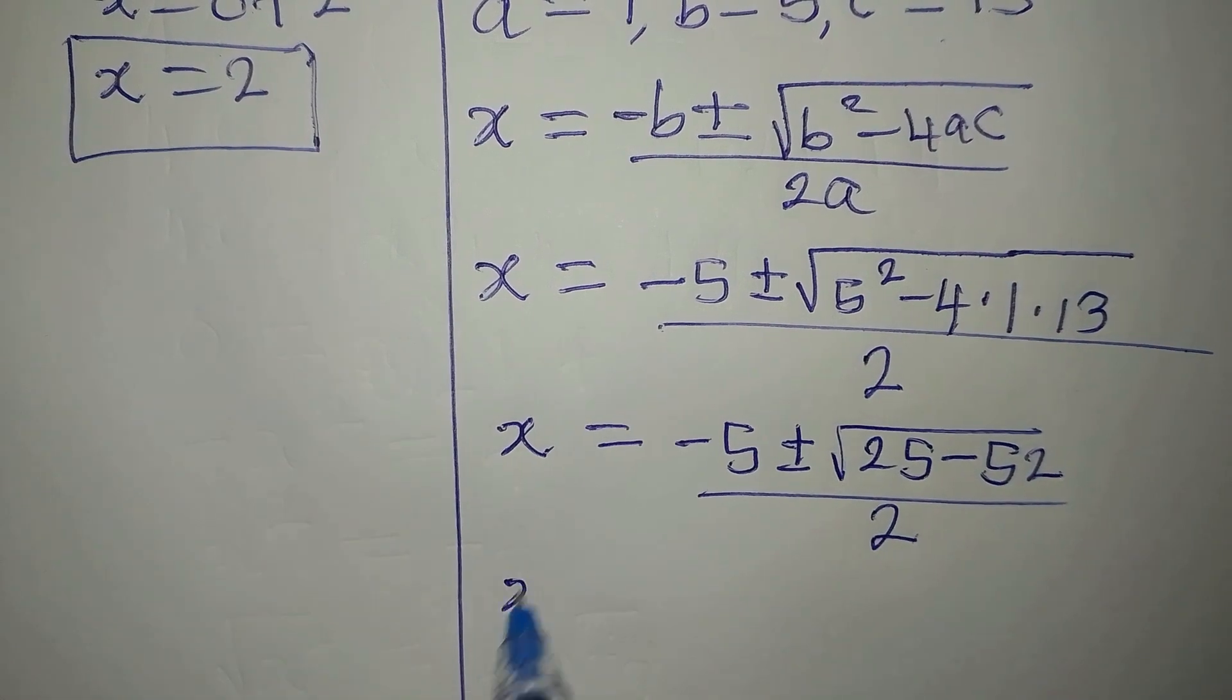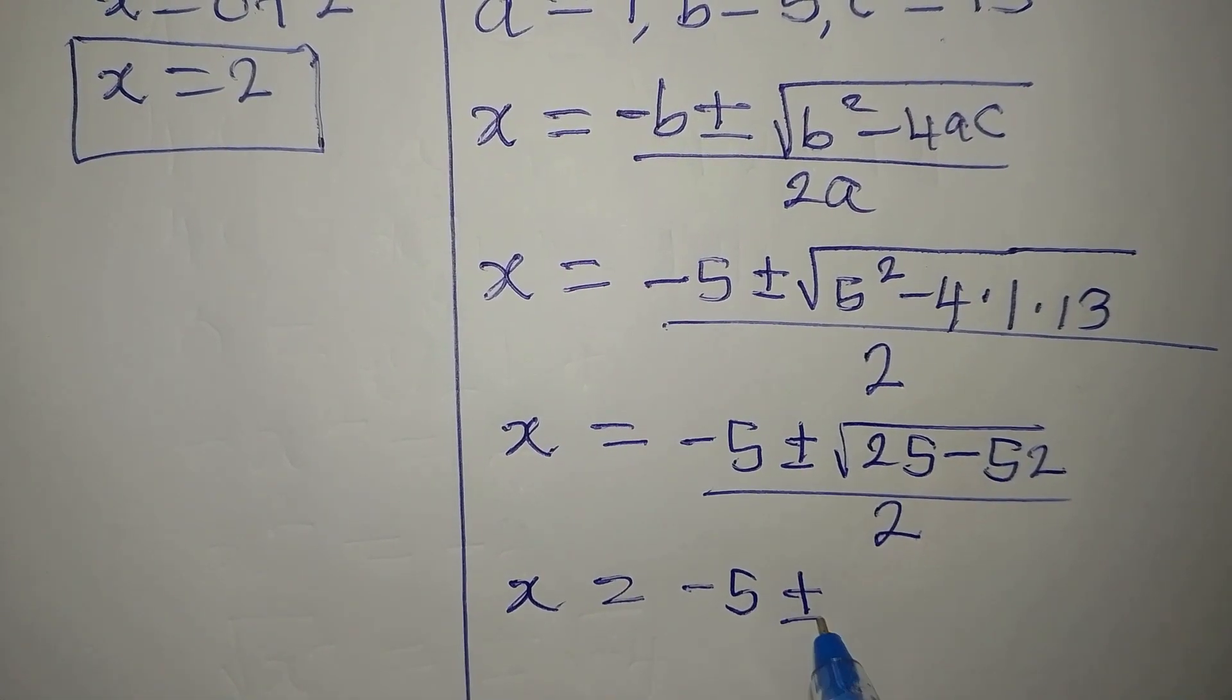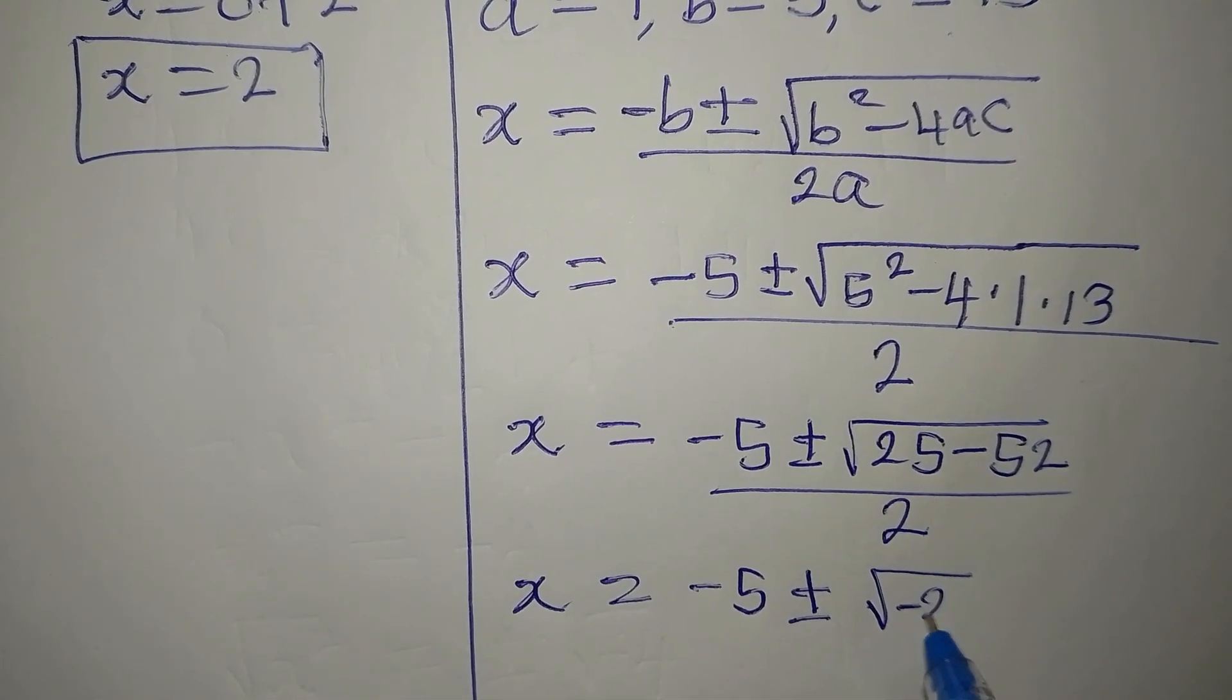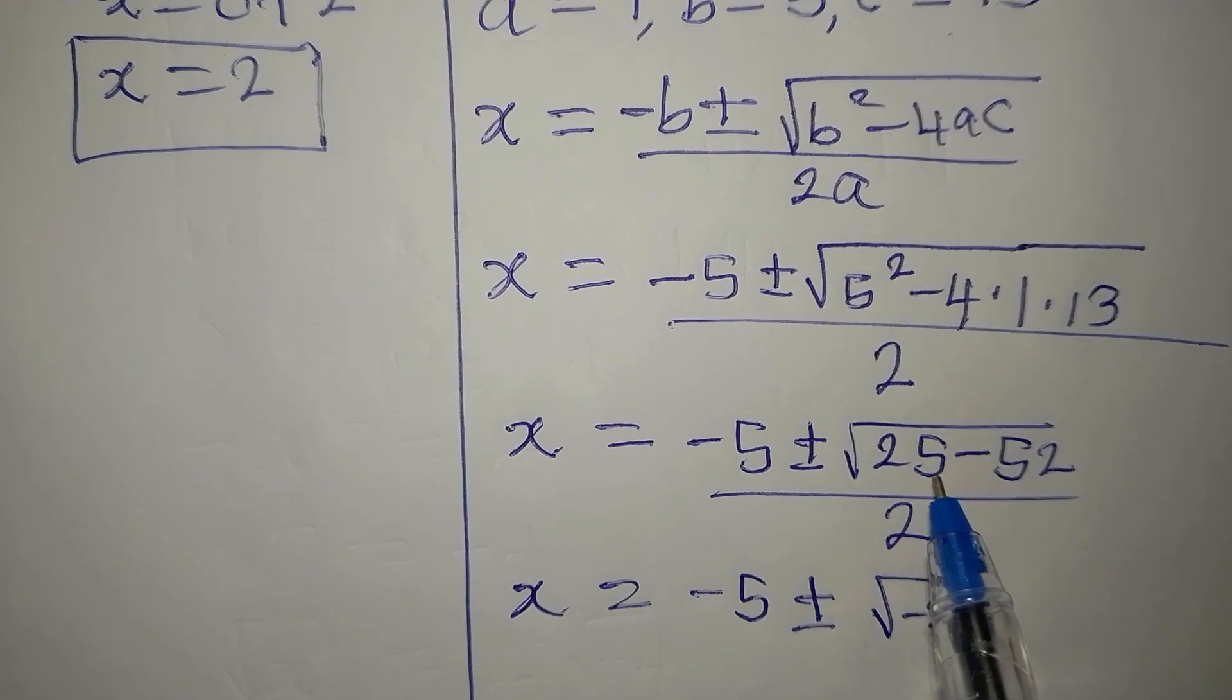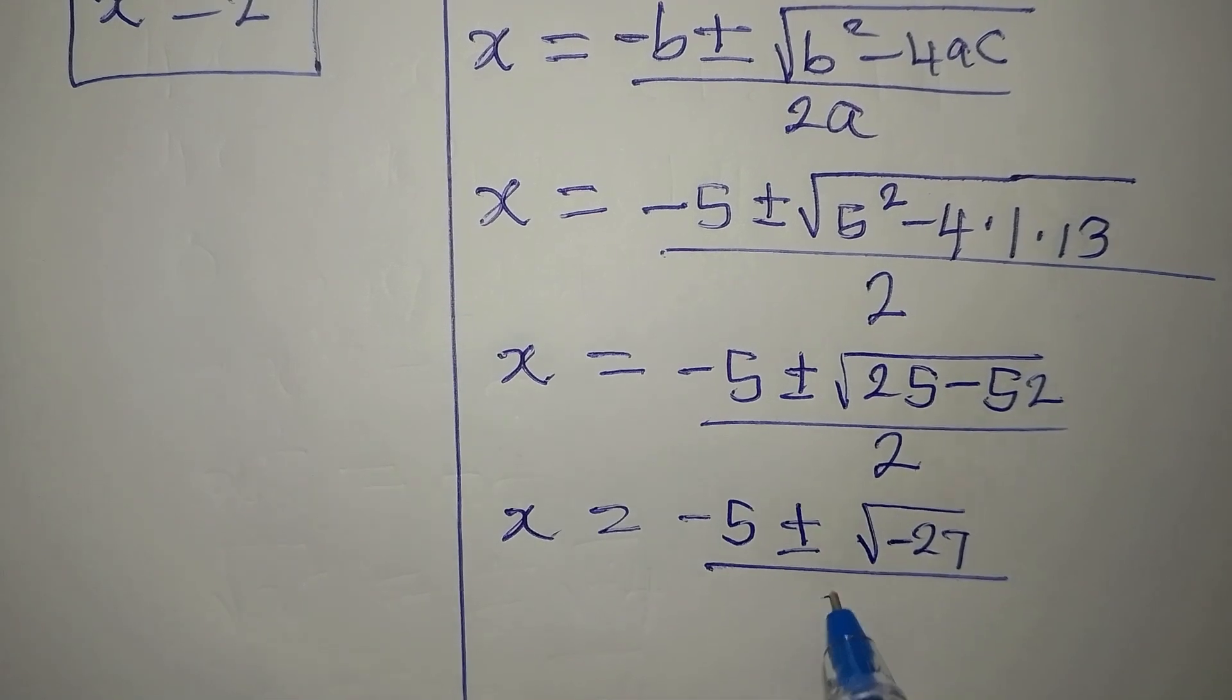To go ahead, our x will be minus 5 plus or minus square root of negative 27, because 25 minus 52 is negative 27, and we divide that by 2.